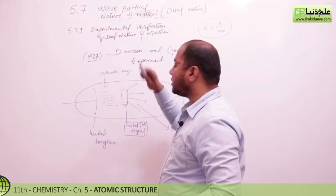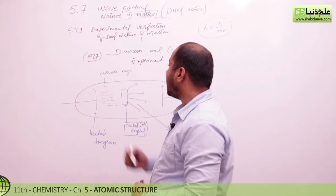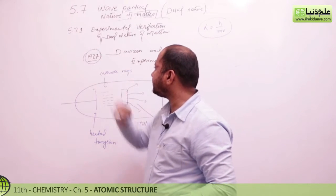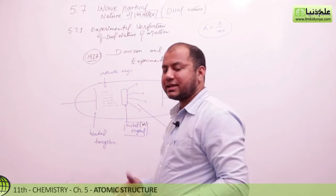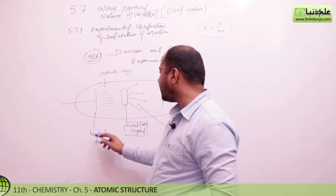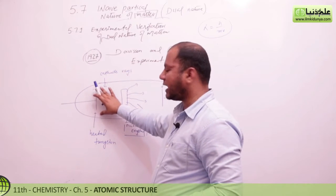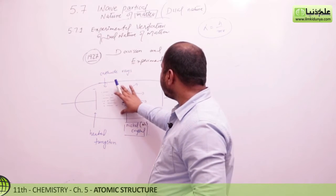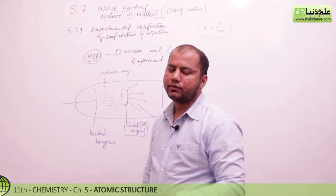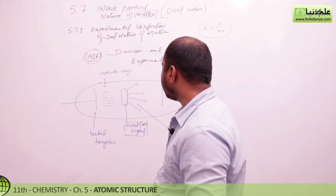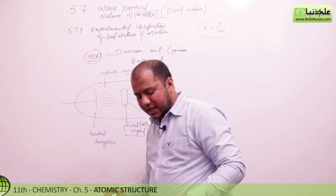In 1927, they proved it. They used tungsten cathode rays and passed them through a nickel crystal. They diffracted the cathode rays through it, and just as you know, waves go through.